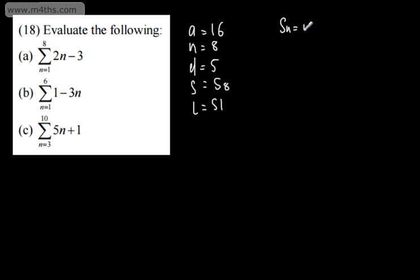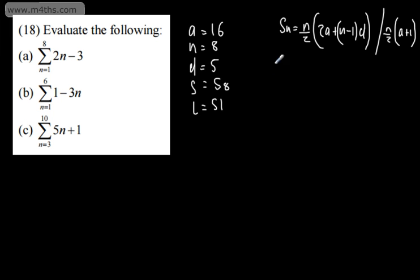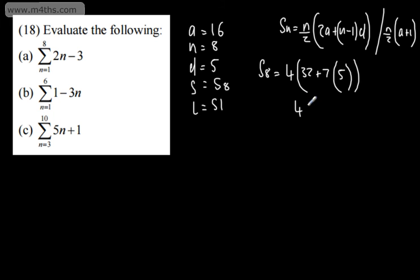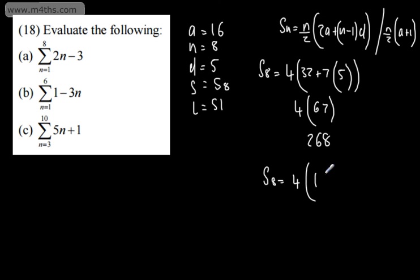Using the formula, the sum of 8 terms is 8 over 2, which is 4, times (2 lots of A, which is 32, plus n minus 1, which is 7, multiplied by d, which is 5). That gives 4 times (32 plus 35), which is 4 times 67, giving 268. Using the a plus l method: 4 times (16 plus 51) gives 4 times 67, exactly the same outcome of 268.